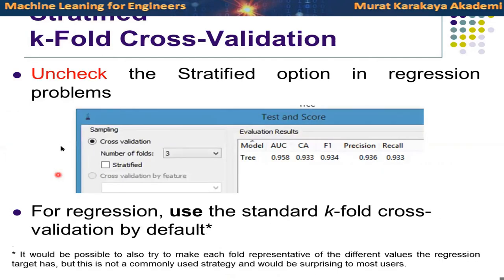Please uncheck the stratified option for regression. In regression the values are continuous, whereas in classification target values are categorical. For categorical values we can reason about class distributions, but in regression since values are continuous you don't want to group similar values into one fold and different values into another — that restricts generalization power. Some folds could be easy and some harder to calculate. Unless you know exactly what you are doing, don't check stratified in regression.